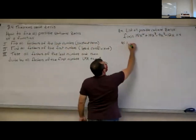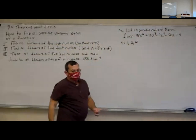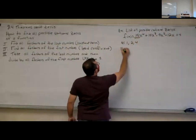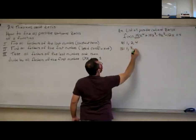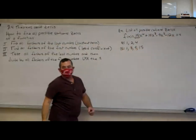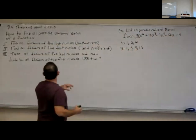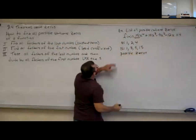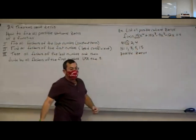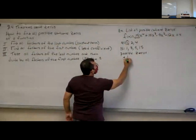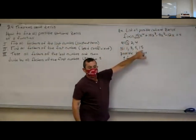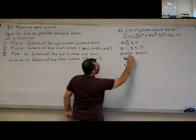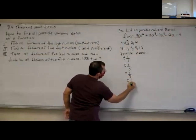Factors of 4 would be 1, 2 times 2, and then 4. Then I take all the factors of my first number, which is 15. So 15 has a 1, 3, 5, and 15. Now to find all the possible zeros, I'm going to start with the first factor of 4, which is 1. I'm going to use my plus or minus, and take that 1 and divide by all four factors of 15. So I've got 1 divided by 1, 1 divided by 3, 1 divided by 5, and 1 divided by 15.